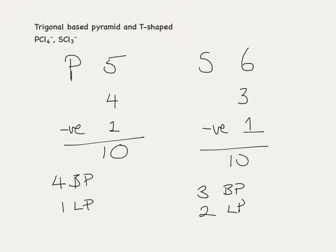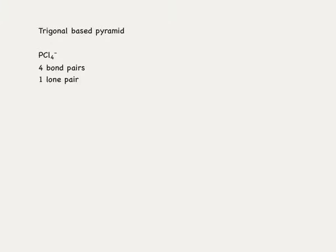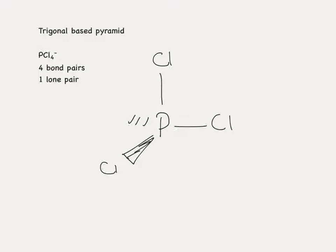PCl4- is based on a trigonal bipyramid but is actually see-saw shaped, with phosphorus in the centre. In the plane we have two chlorines up and down, one chlorine coming towards us and one going away. Below and in the plane we have our lone pair of electrons. The bond angles are slightly reduced: the axial angles drop from 90 degrees to around 88 degrees, and we can assume a drop of about 2.5 degrees per lone pair, while the equatorial angles remain around 120 degrees.